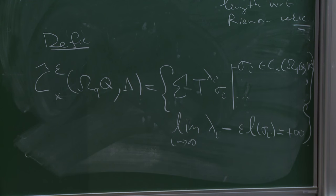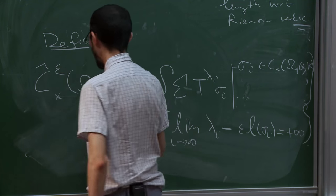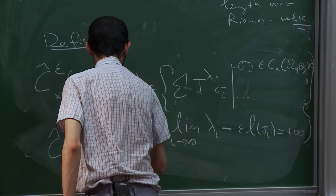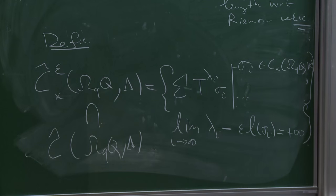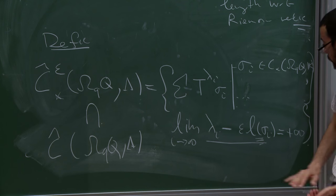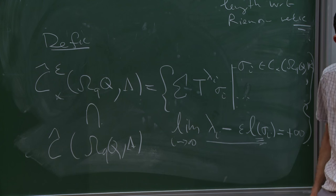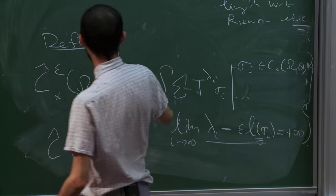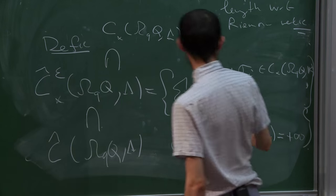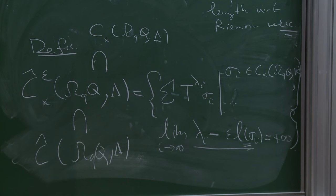Let's stare at this for a second. The first observation is that this completion is included in the usual one, because this quantity is always positive. So if this expression goes to infinity, then in particular if you don't have this negative term, the λᵢ better go to infinity themselves. And of course this includes the usual chains with no completion whatsoever, because if you have finitely many terms there's nothing to say.